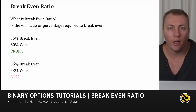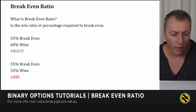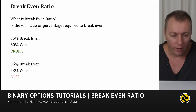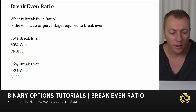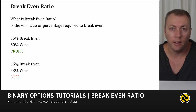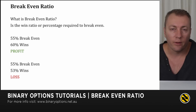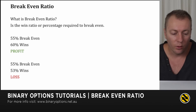So what is break-even ratio? It is the win ratio or win percentage required to break even. So if the break-even ratio is 55% and you win 60% of your trades — whether that be in a day, over a month, or over your whole trading lifetime — you would be profiting. Conversely, if your win percentage was 53%, which would be below the 55% break-even ratio, you would actually be running at a loss and will eventually go bust.